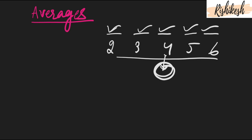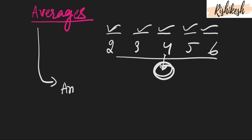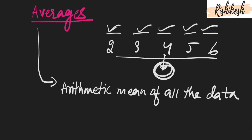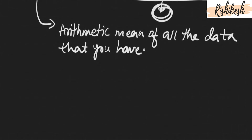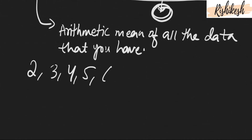The central value of the data means that the value of the average will remain in the middle of the data. But how do we find that central value? Average is nothing but the arithmetic mean of all the data that you have. So average of all data is the arithmetic mean of this data.